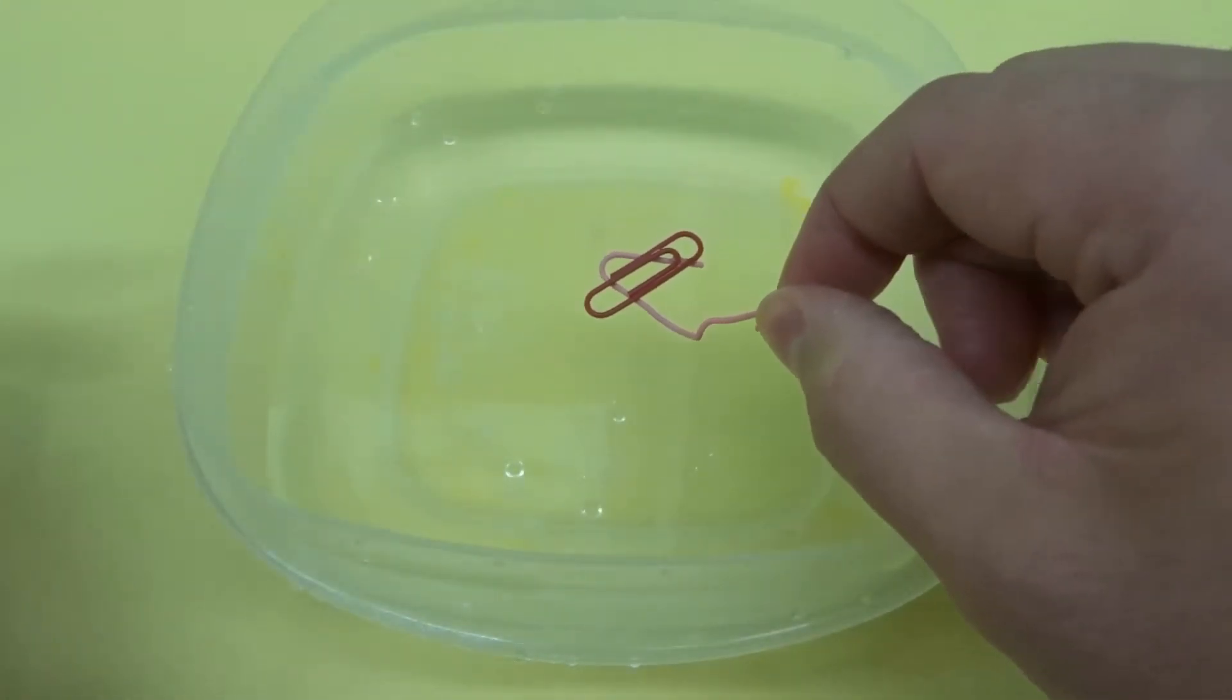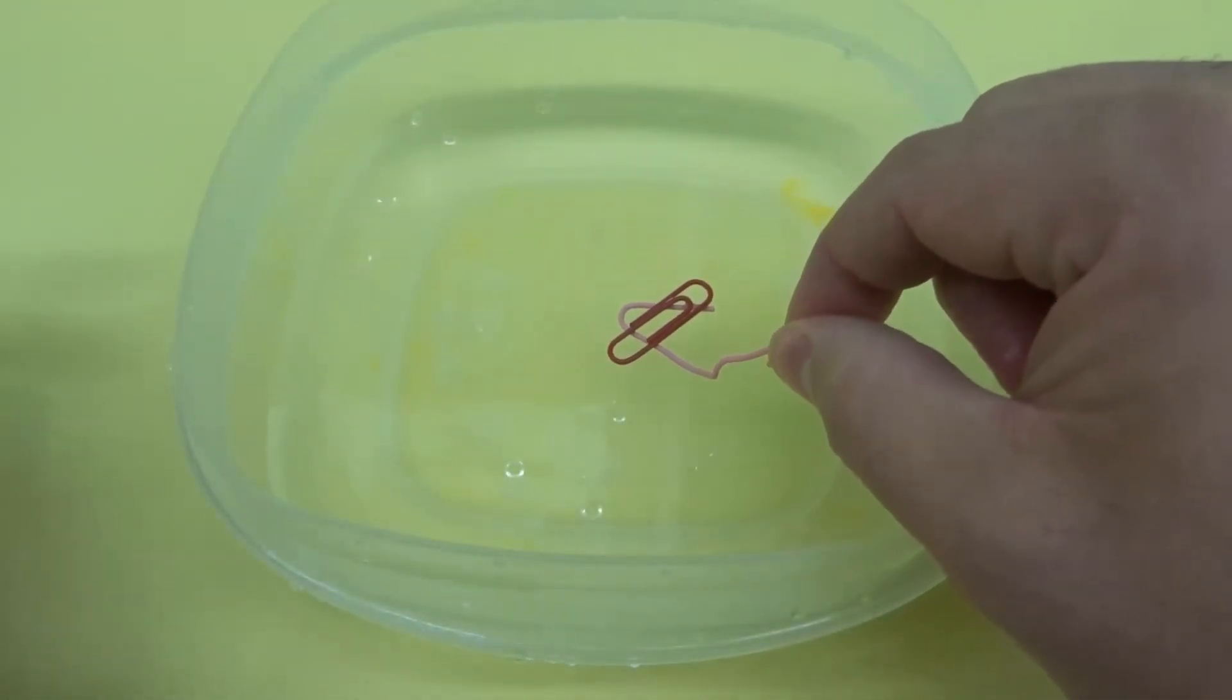So as you can see I'm just going to slowly, slowly place it down on the water. Just like that, really slowly. You want to just make it touch the water and ever so slowly bring the other paperclip down.